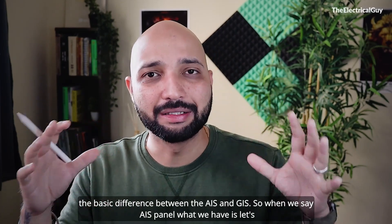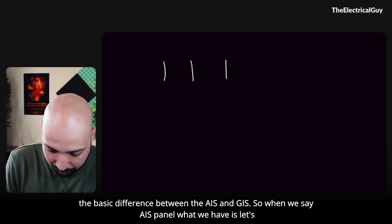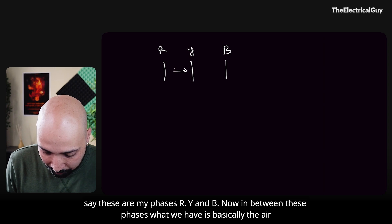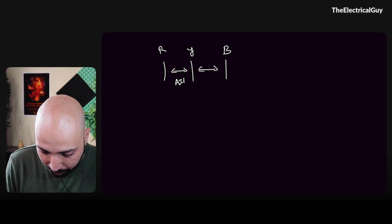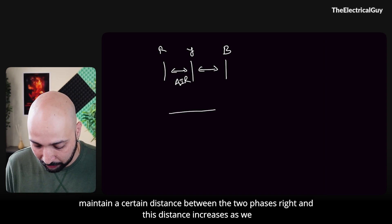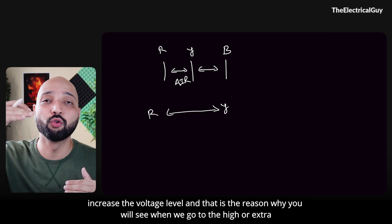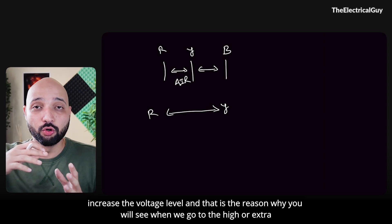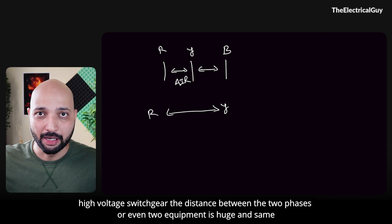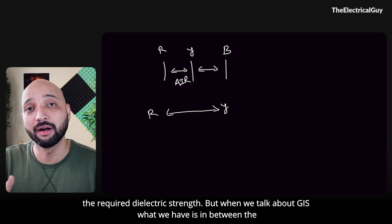Let us first start by understanding the basic difference between AIS and GIS. In an AIS panel, between the phases R, Y and B, what we have is basically air. Since the dielectric property of air is not very strong, we have to maintain a certain distance between the two phases, and this distance increases as we increase the voltage level. That is why at high or extra high voltage, the distance between phases or equipment is huge.